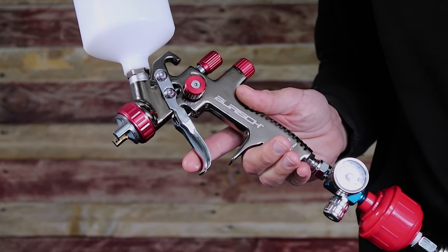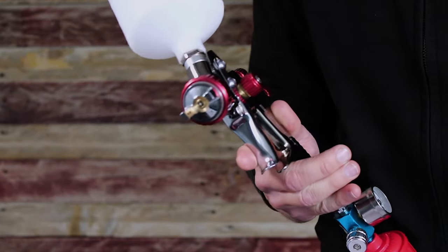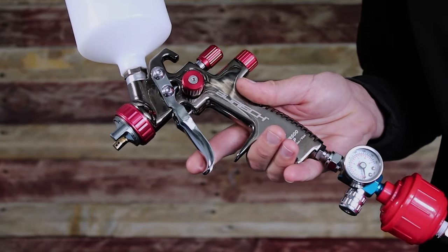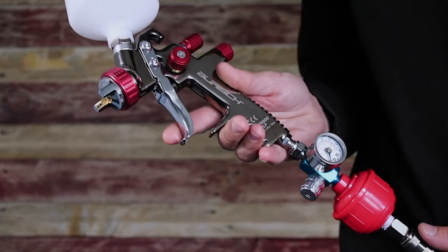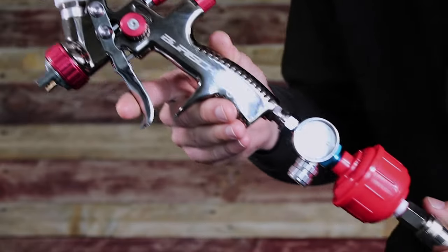In this case we are looking at the Burish GTR 500 LVLP gravity feed spray gun. Most spray guns will have similar adjustments but may be located in different areas of the spray gun. There are three adjustments on this particular gun which we will now explain in further detail.